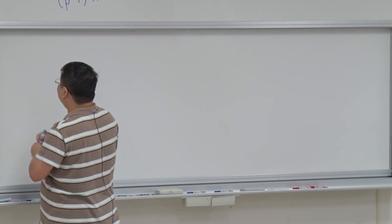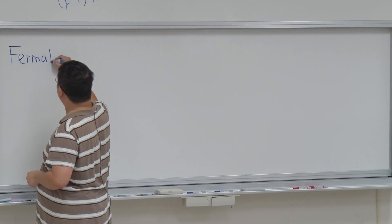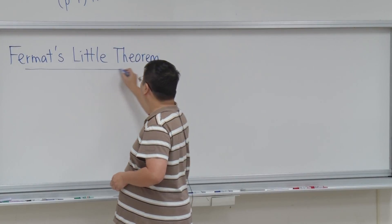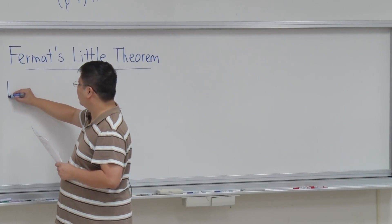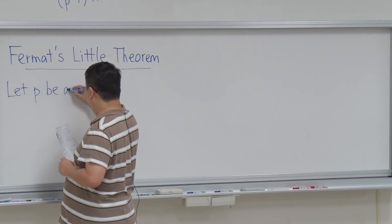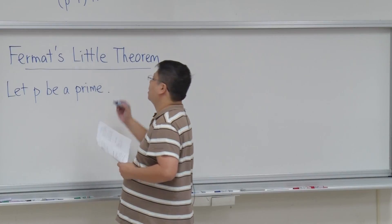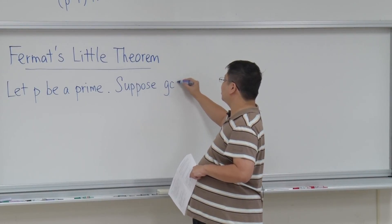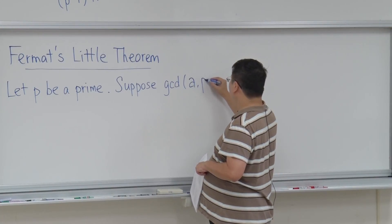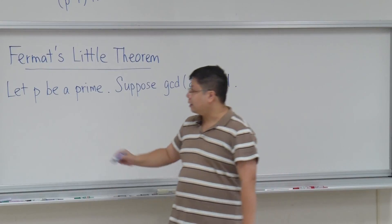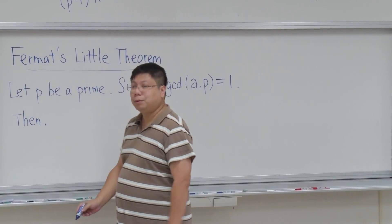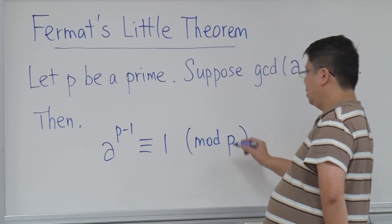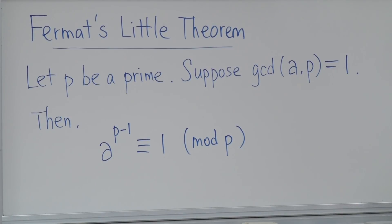Now we can prove Fermat's Little Theorem. Fermat's Little Theorem says: starting with a prime P, suppose that A and P are co-prime — that is, GCD(A, P) = 1 — then A to the power P minus 1 is always congruent to 1 modulo P.